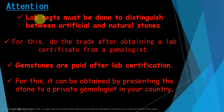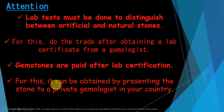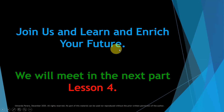A lab test must be done to distinguish between artificial and natural stones — remember this. Do the trade only after obtaining a lab certificate from a gemologist. Gemstones should be paid for after lab certification. You can see the stone and discuss the price, then wait until the certification comes, and then pay and buy. This can be done by presenting the stone to a private gemologist in your country. Join us, learn, and enrich your future. We will meet in the next part — Lesson 4.